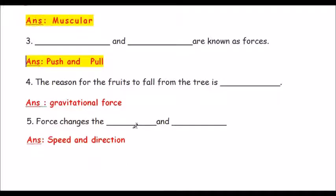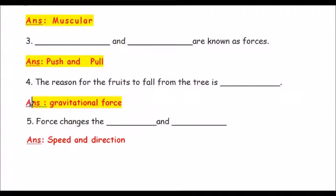Question number 4: The reason for the fruits to fall from the tree is dash. The answer is gravitational force. The reason for the fruits to fall from the tree is gravitational force.